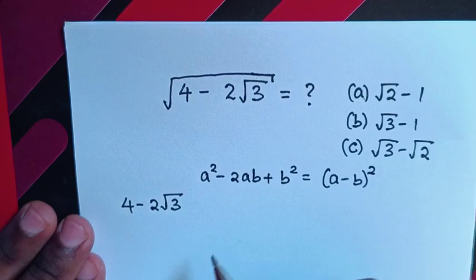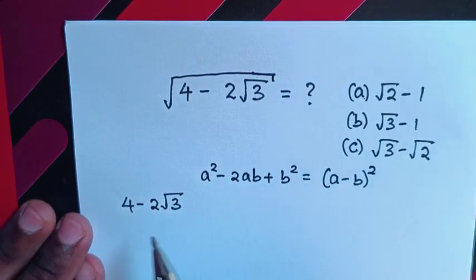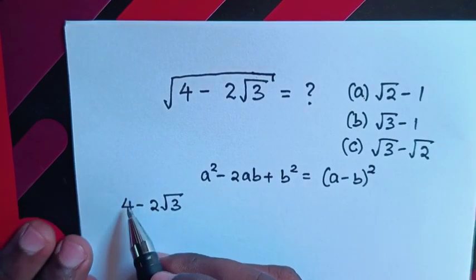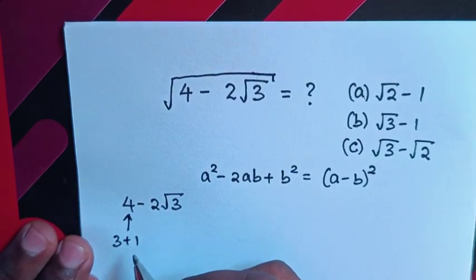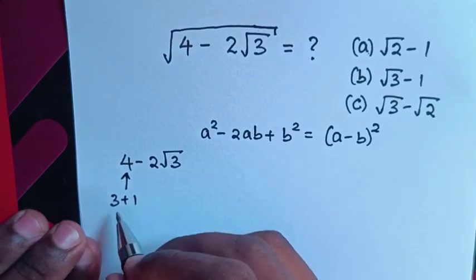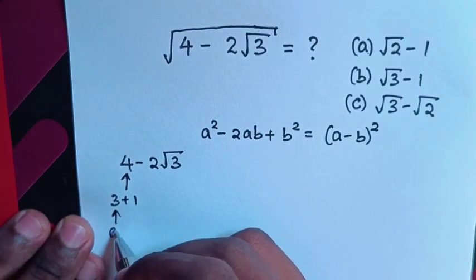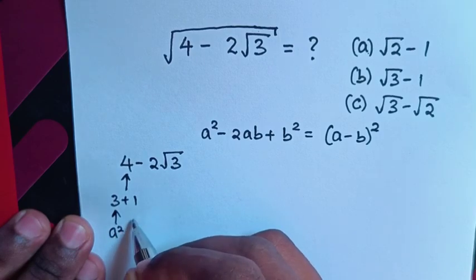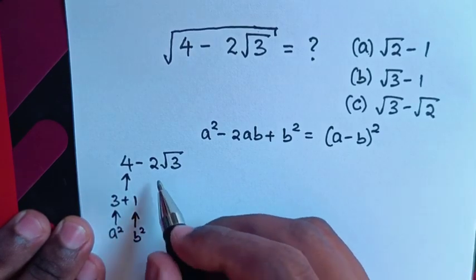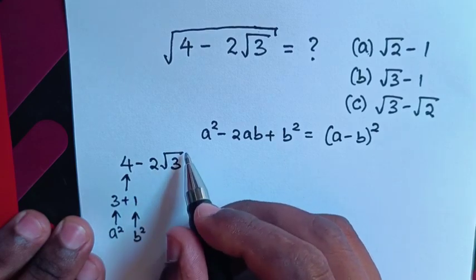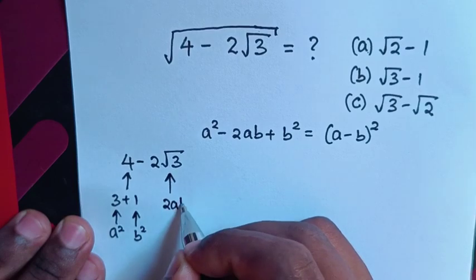So from this expression, a squared plus b squared will be equal to 4. From 4, it will be 3 plus 1. So here, 3 will be a squared and 1 will be b squared.